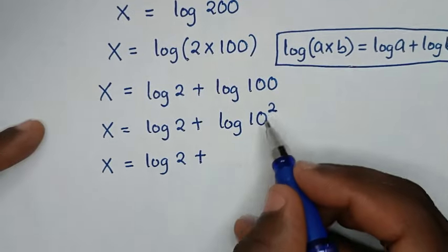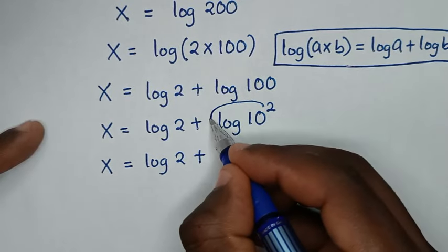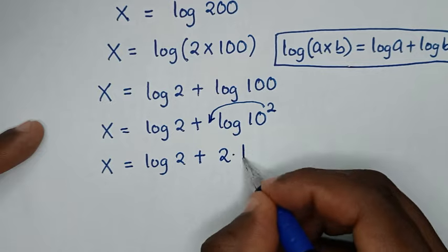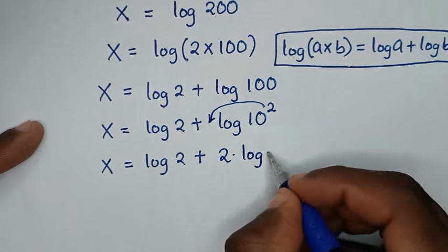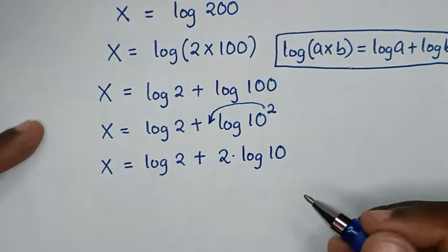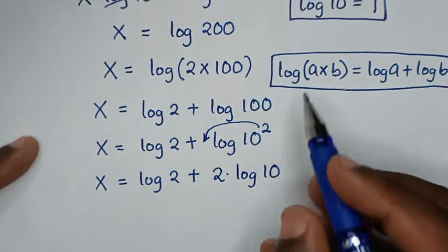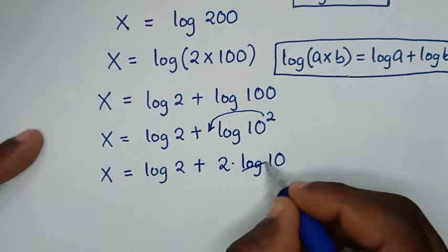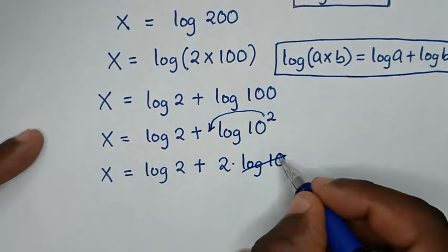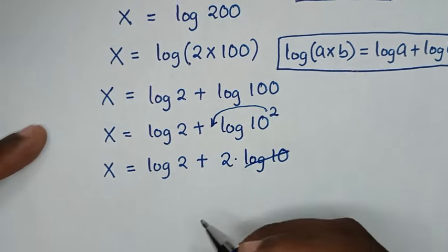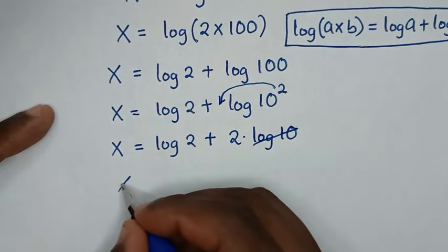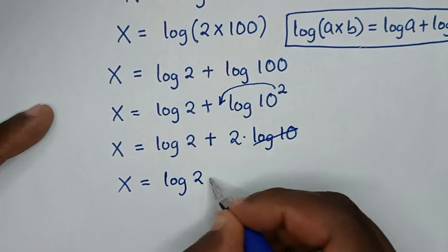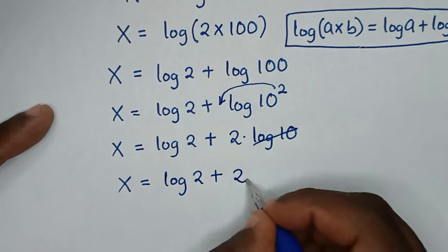The square moves to the front using the power rule, so it will be 2 times log of 10. Since log of 10 is equal to 1, we have 2 times 1, which is 2. So x is equal to log of 2 plus 2.